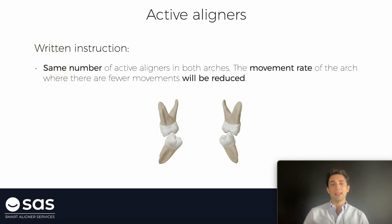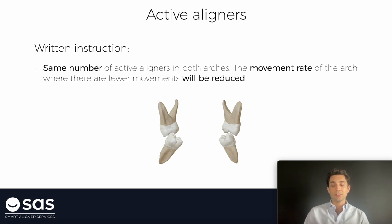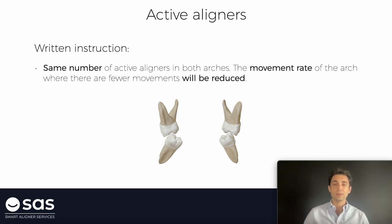Let's begin with active aligners. The instruction I used to write to the technician is: please use the same number of active aligners in both arches. The movement rate of the arch where there are fewer movements will be reduced. This has a reason. If we do a case with 10 aligners on the lower arch and 50 aligners on the upper arch, movements cannot be coordinated. Upper and lower arch are always working together — the masticatory system is just one piece. Upper and lower arch, bite, grind, all together, all days. And if we do different movements on one arch relative to the other, those movements could be less predictable.